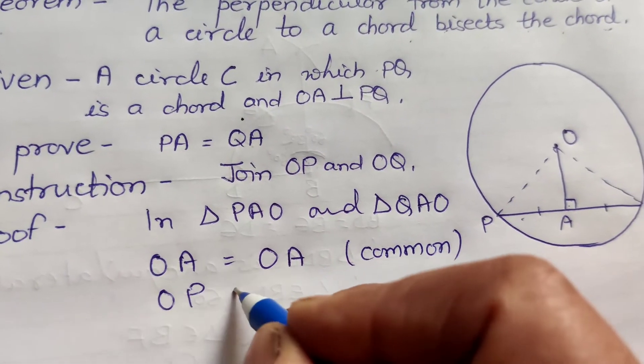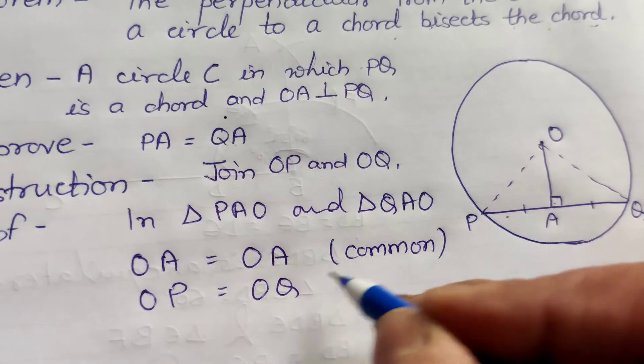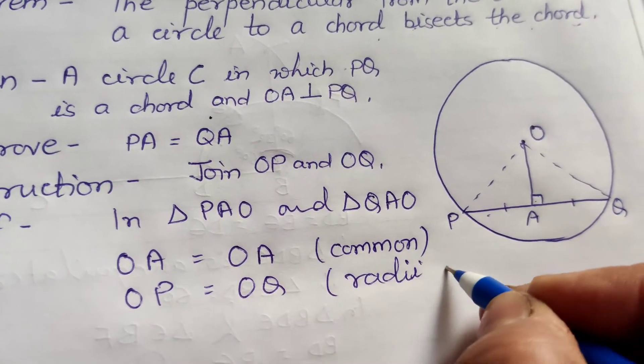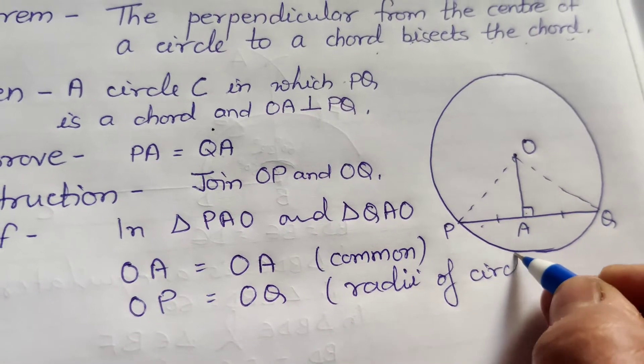Phir, OP equal to OQ. Yhe kya hai? Radia of circle. Jho radius hoti hai, circle ki waapas me kya hoti hai? Equal.